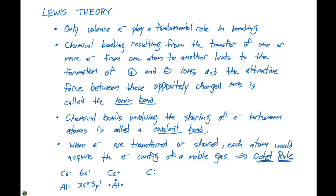For carbon, we have an electron configuration of 2s2 2p2 for its valence shell, and we place four electrons around the carbon. For bromine, its valence electron configuration is 4s2 3d10 4p5. When we have a completely filled subshell such as 3d10, we can ignore that because a completely filled D subshell is not going to be involved in bonding. The same applies to a completely filled F subshell — D10 or F14 are not considered valence electrons. So for a bromine atom, we indicate seven electrons around it.